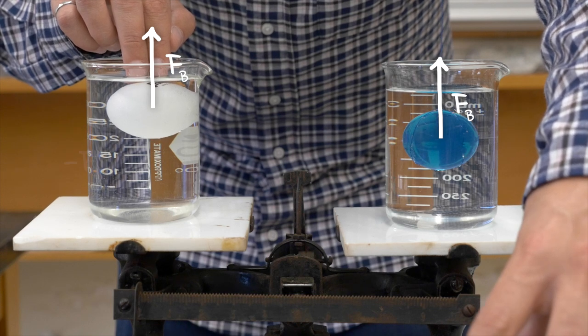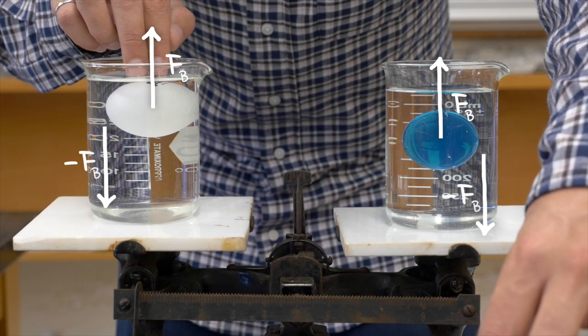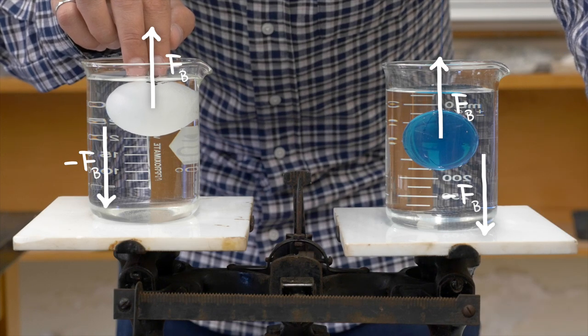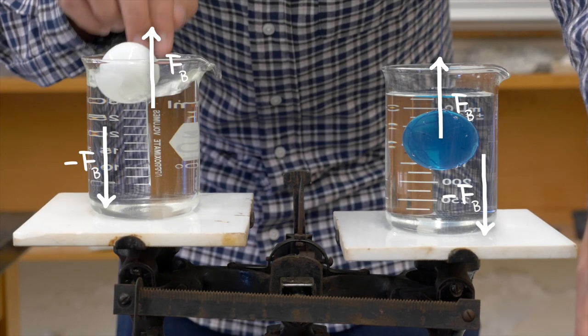Therefore, there are equal and opposite downward forces on the water, making both beakers heavier by this amount. And our answer could stop here.